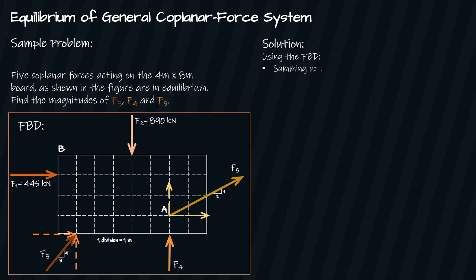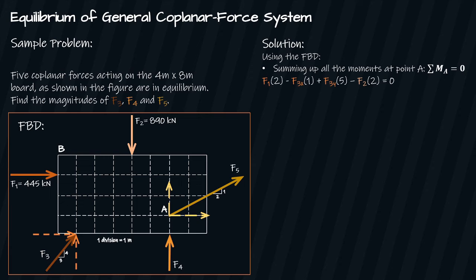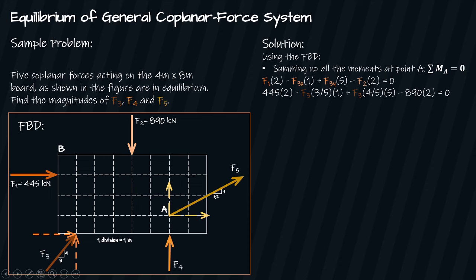Assuming clockwise direction of moment is positive: F1 times 2 minus F3x times 1 plus F3y times 5 minus F2 times 2 equals zero. Substituting the values of F1 and F2, we proceed. Note that the components F3 × (3/5) and F3 × (4/5) are derived from the force's slope defined through its run and rise — review your notes on statics of rigid bodies for this. Solving, F3 equals 261.765 kilonewtons.